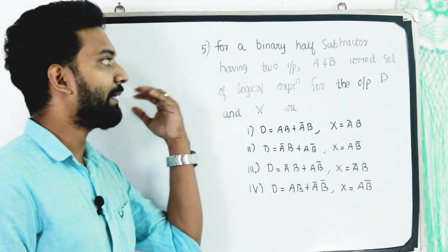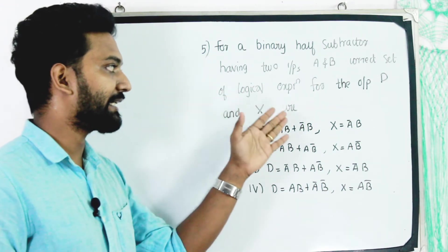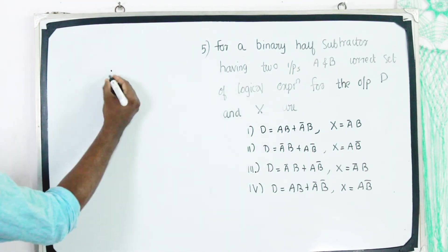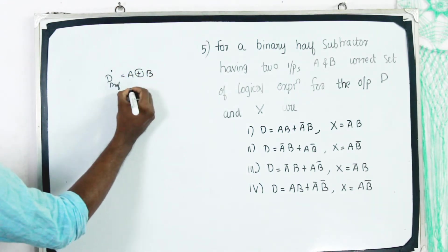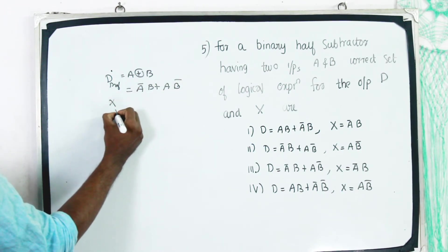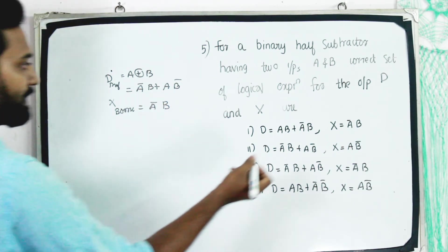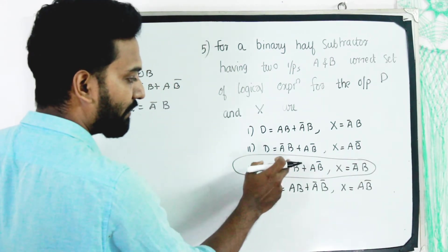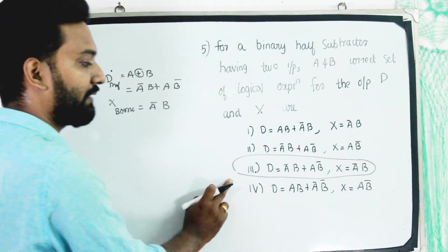For a binary half subtractor having two inputs A and B, the correct set of logical expressions for the output D and borrow: the difference is equal to A XOR B, which equals A complement B plus AB complement. The borrow equals A complement B. The answer is Option C.